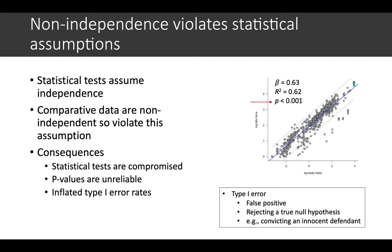The consequences are that statistical tests are compromised. That means that, probably the easiest way to say is, the p-values are unreliable and it has inflated Type I error rates.